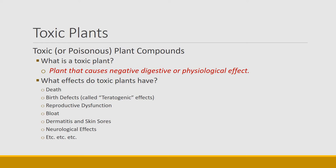Lots of other reproductive dysfunctions include animals not being able to rebreed, bloat, and a certain class of compounds that cause discomfort on the skin — dermatitis or skin sores. There are also many neurological effects such as acting crazy, going around in circles, etc.